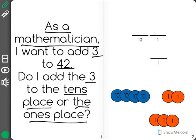At the top I have my place value markers. I'm going to put 42 and I know that we are adding the number 3.